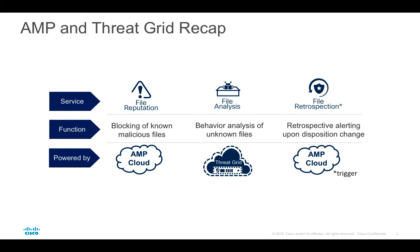Eventually this can also trigger retrospective events that help notify customers about all locations where these files were seen on the network — whether on a network or content gateway or on the endpoint, depending on where the AMP license is deployed. What's important to keep in mind is that the authoritative source for convicting a file is the AMP cloud, but not ThreatGrid directly.